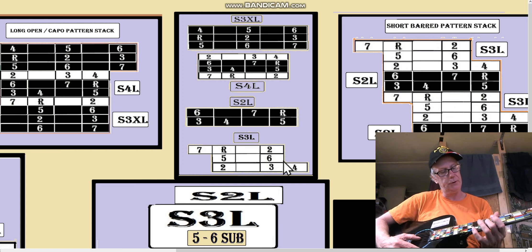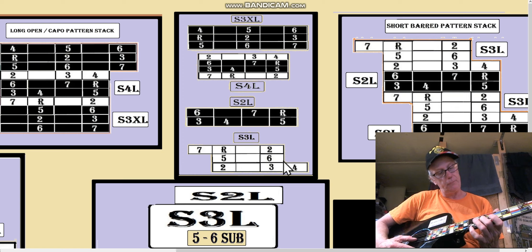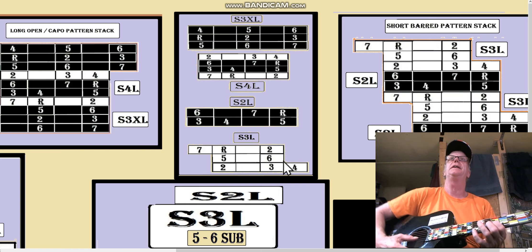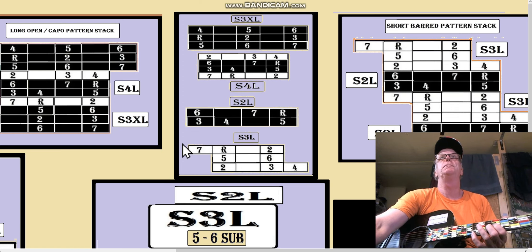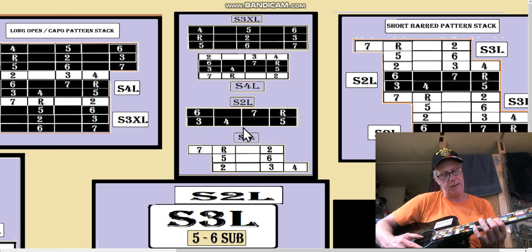Here's the root, so I know root's going to be root-two. There's seven-root-two. Let's just say you've isolated it and you can play the S3L and the S2L of this pattern.